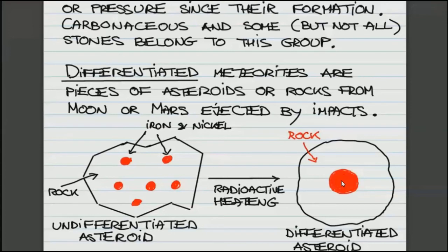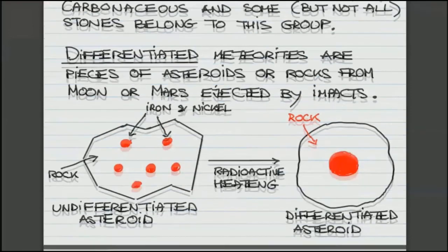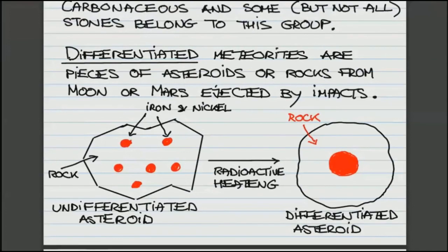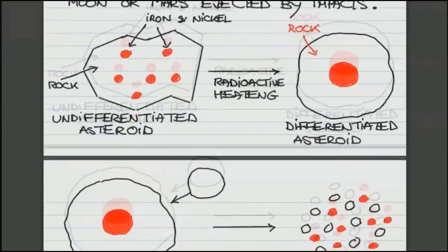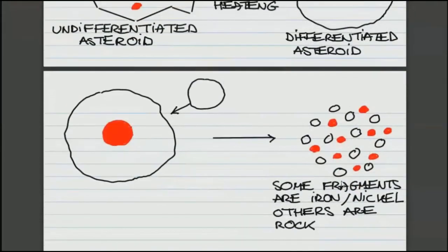So this is the transition from undifferentiated asteroid to the one that is differentiated. So then if such a differentiated asteroid is struck by another asteroid because there are so many of them that the collisions are likely. So if a differentiated asteroid was struck by another one, it could break up because of the impact. So you end up with the smaller pieces, and some fragments are pure iron-nickel, and others are rock.